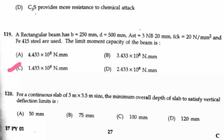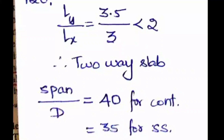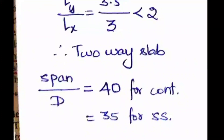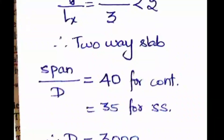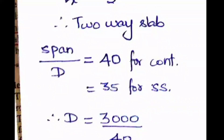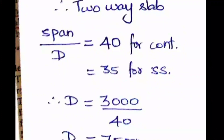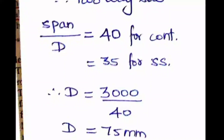Question number 120: For a continuous slab of 3 m × 3.5 m, find the minimum overall depth to satisfy the vertical deflection limit. First check: ly/lx = 3.5/3 < 2, so it is a two-way slab. The span-to-depth ratio for a continuous two-way slab is 40, so minimum depth = 3000/40 = 75 mm. Option B is the right answer. Thank you and keep watching for the continuation of this question paper discussion.